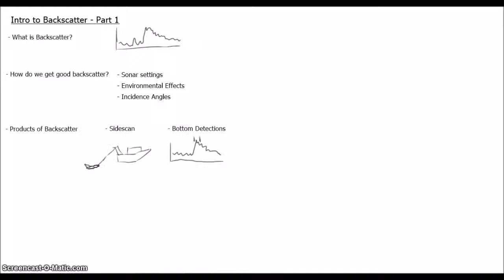So we've talked a little bit about what backscatter is, and some of the things you need to consider in order to get good backscatter. We've also talked about products of backscatter, like bottom detections and side-scan sonar. But how do we balance backscatter and bathymetry? Do we need to set up the sonar differently for each product? What are the important elements to backscatter acquisition?